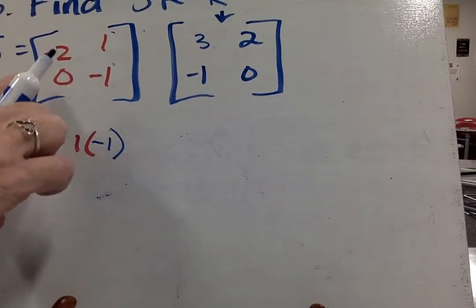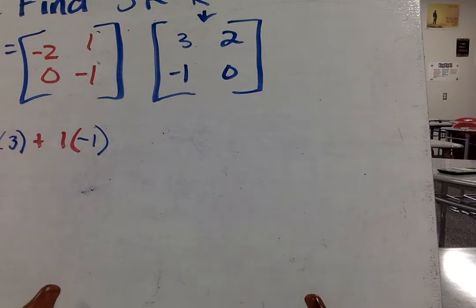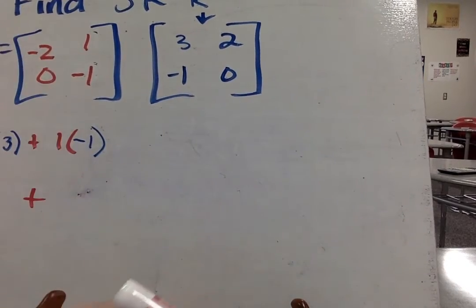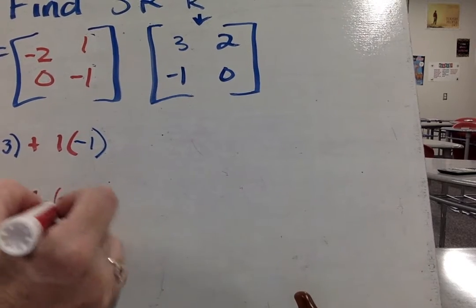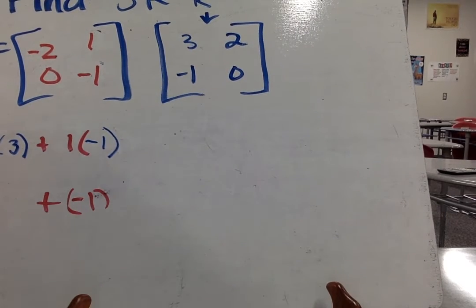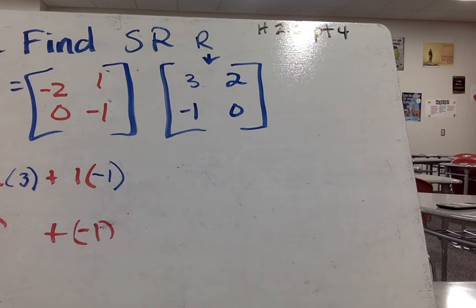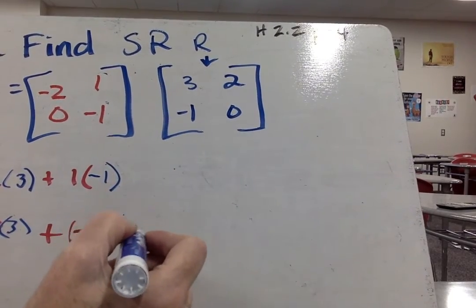This one goes across, this goes down. Then I'm going to go across down here, down with the first row. So again, we're going to go 0 times 3 plus negative 1 times negative 1. So 0 times 3, and that's going to be times negative 1. So again, you go the first row, first column, second row, first column.